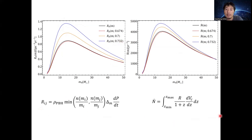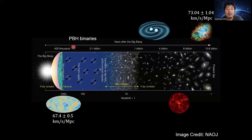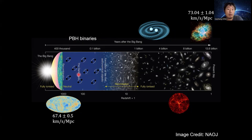In this case, we can use the merger rate of primordial black hole binaries to probe the Hubble parameter value. Primordial black hole binaries can work as probes of the Hubble parameter at high redshift, especially in the Dark Ages. Such a measurement of the Hubble parameter can help us understand where the Hubble tension comes from, and can also help us understand the evolution of our universe from the early stage to the later stage. Thank you.